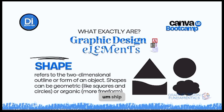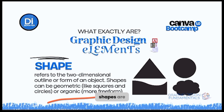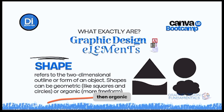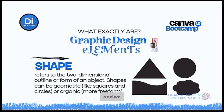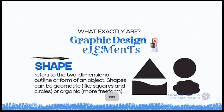Moving on, we have shape. Shapes refer to a two-dimensional outline, form, or object. They can be geometric or organic. A line is 1D, a shape is 2D, while a form is 3D. Geometric shapes are the normal ones — squares, rectangles, triangles. Organic shapes are freeform and can take any type of form, like a cloud, a mango, or an apple. You'll be needing shapes in your designs.